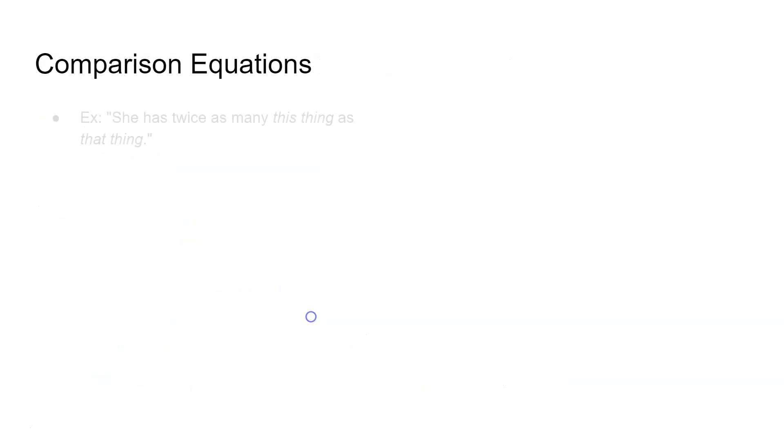Let's look at comparison equations. This is when it says something like she has twice as many this thing as that thing or he has 10 more of this thing than that thing. The information they're giving us is not a total, it's comparing the two things to each other.